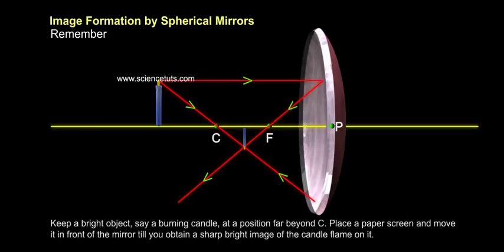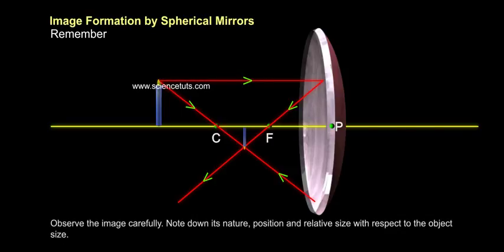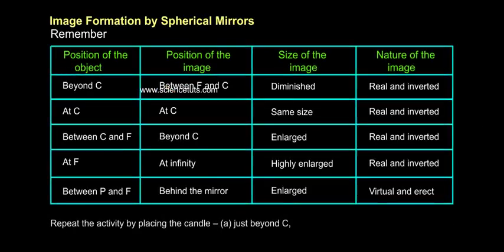Keep a bright object, say a burning candle, at a point far beyond C. Place a paper screen and move it in front of the mirror till you obtain a sharp bright image of the candle flame on it. Observe the image carefully. Note down its nature, position, and relative size with respect to the object size. Repeat the activity by placing the candle.